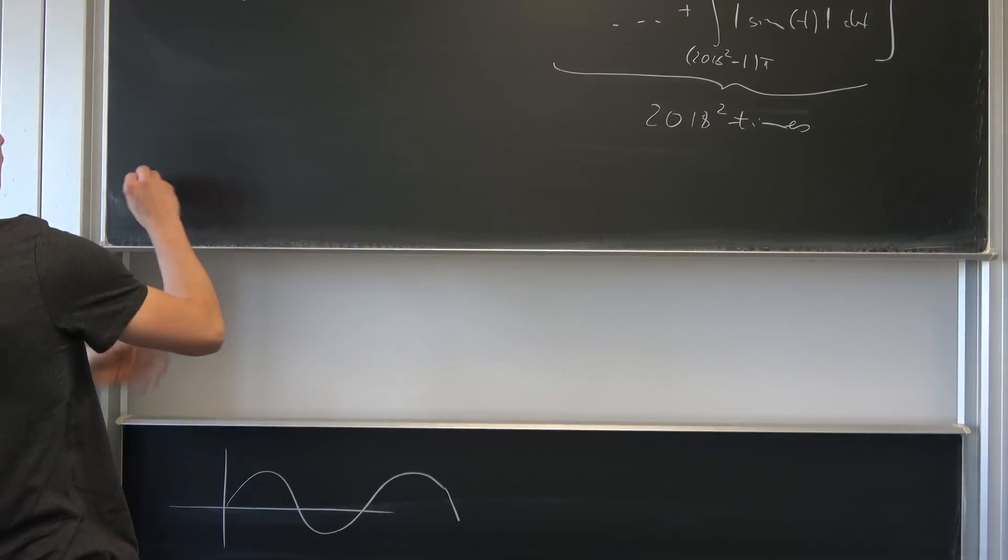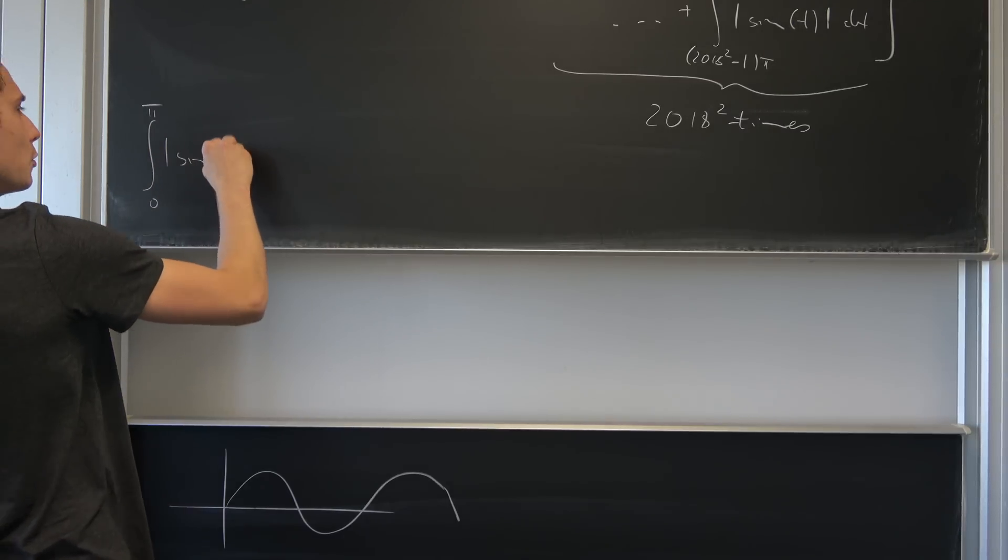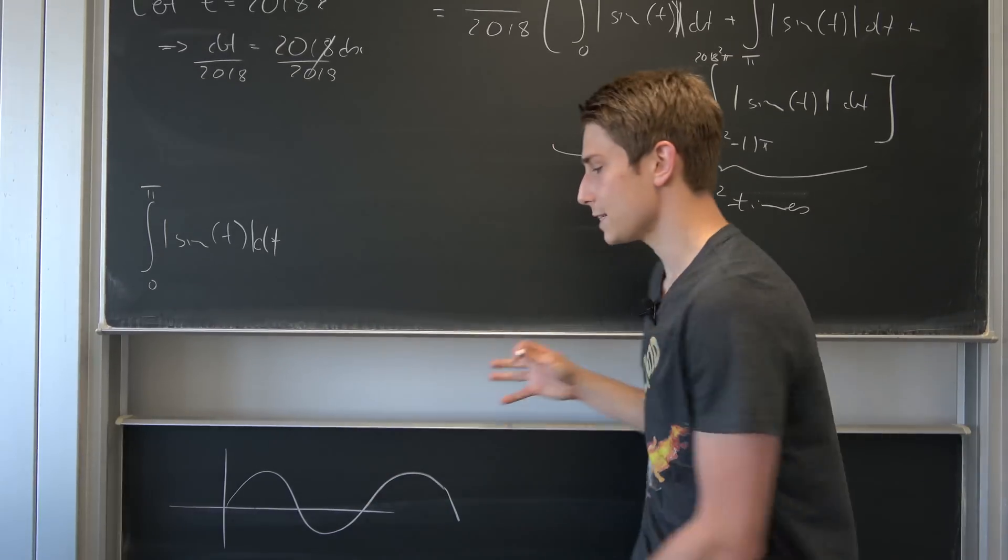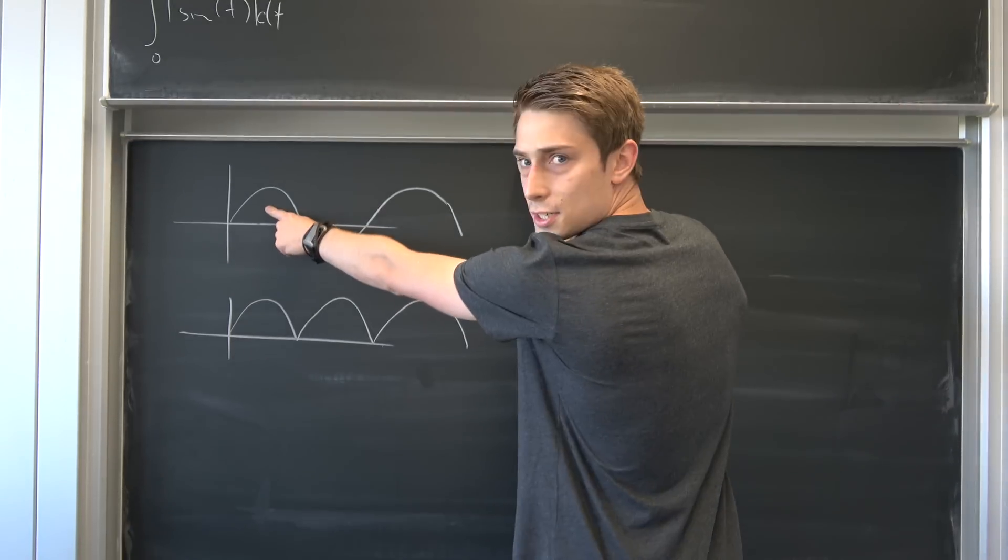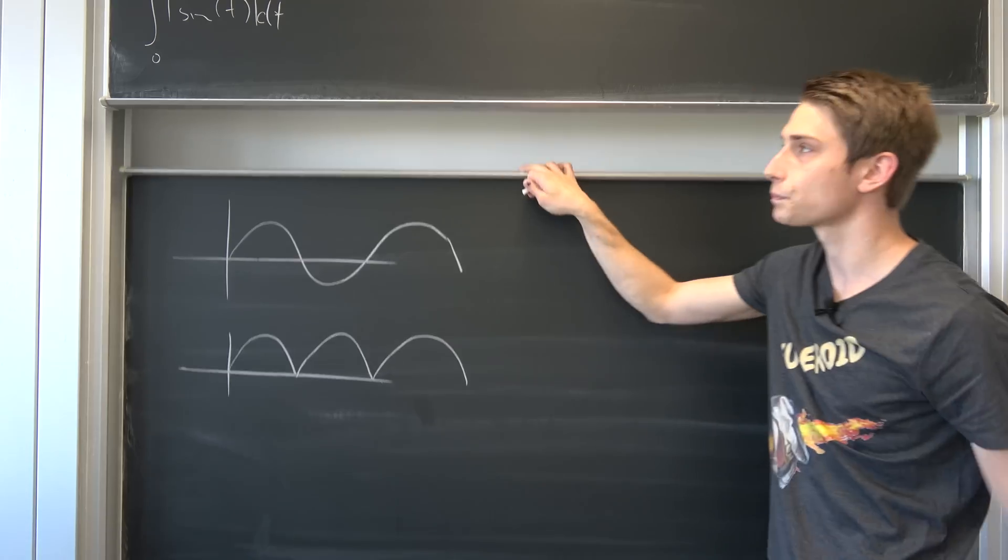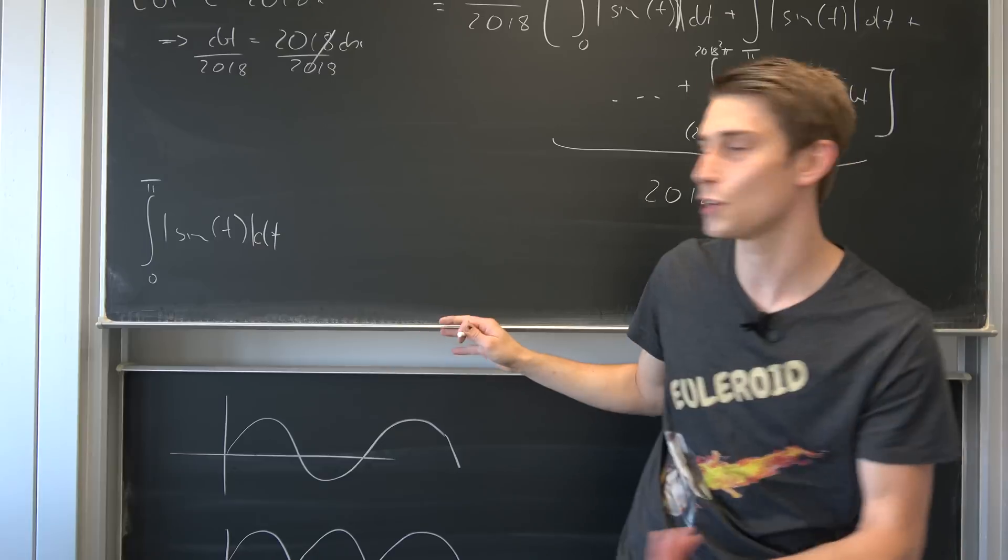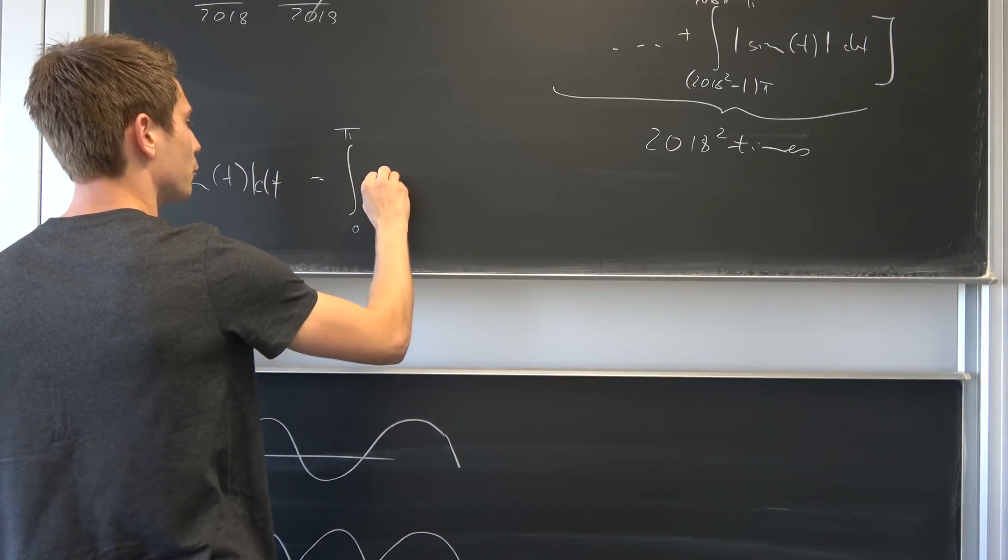So what exactly is the integral from 0 to pi of absolute value sine of t dt? Well, that's really easy to be honest, because on this interval our sine only takes positive y values. So that also means that the absolute value of this thing is just the thing itself. So this is nothing but the integral from 0 to pi of sine of t dt.